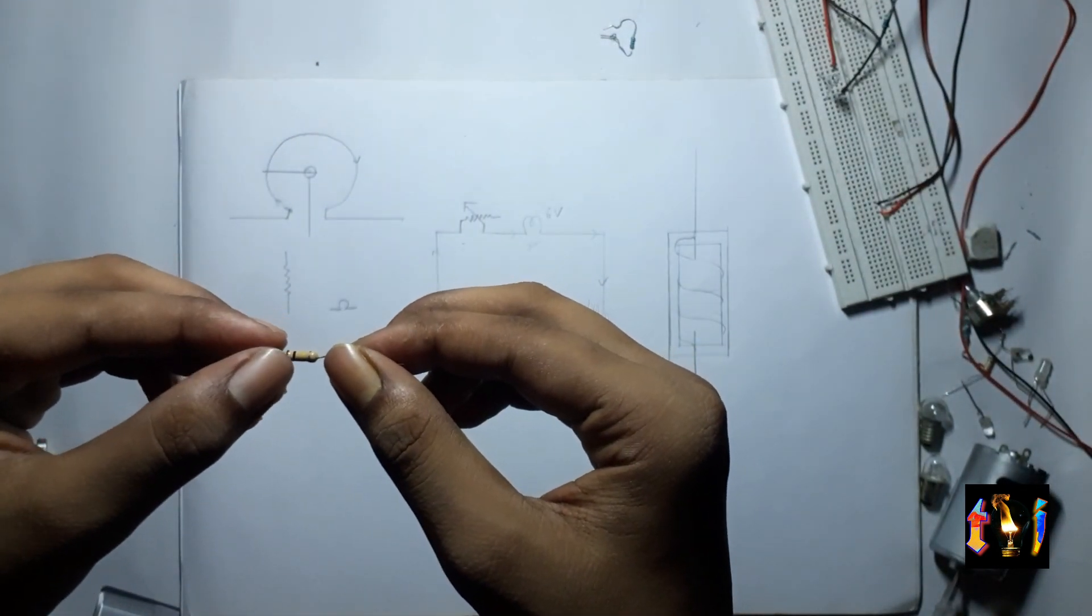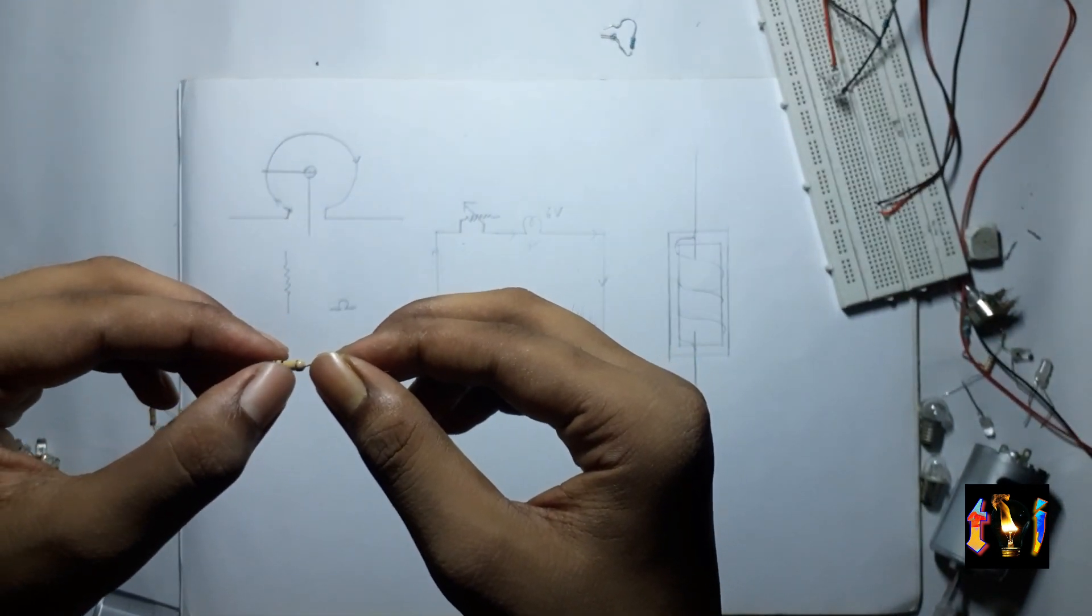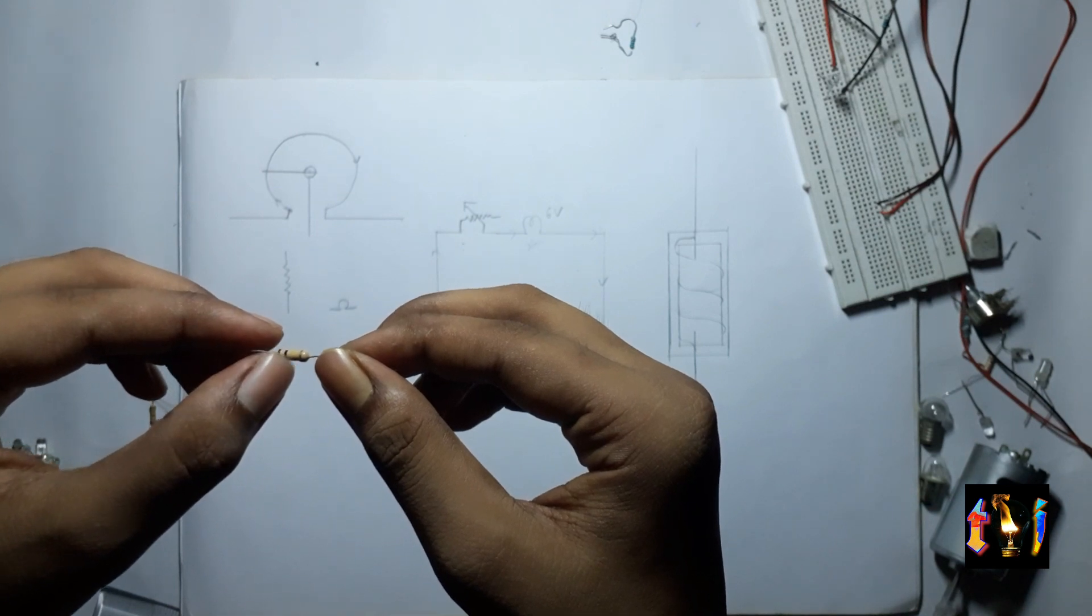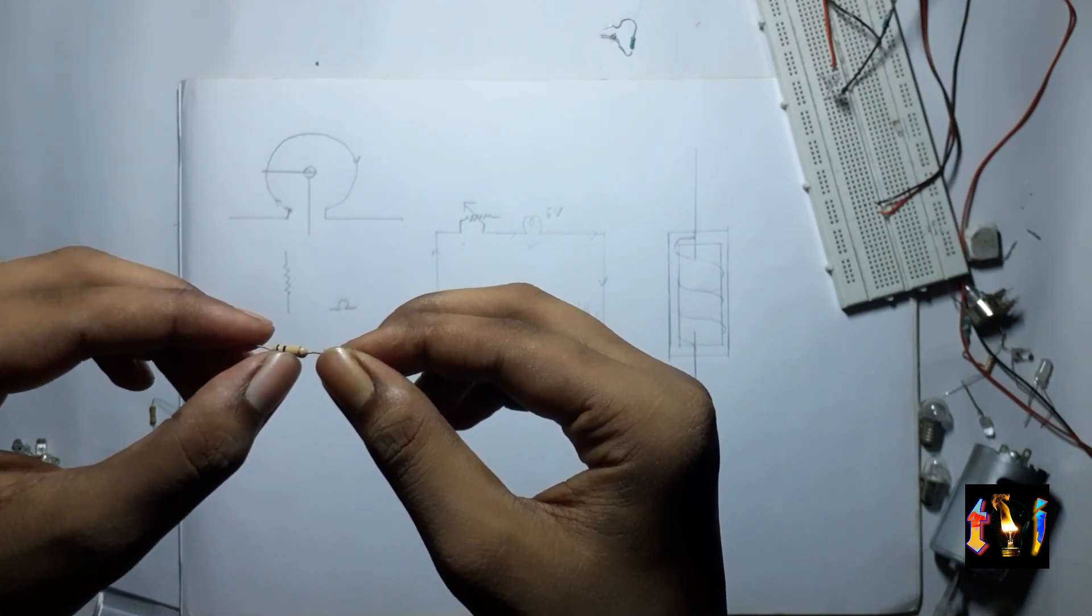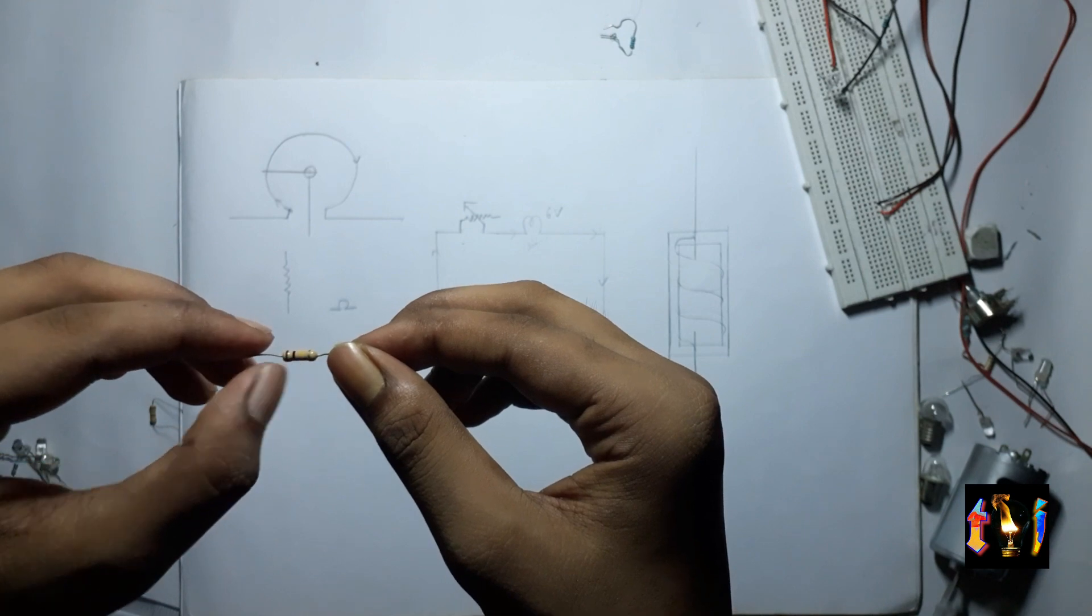So this is one, this is zero zero, that means 10 times three zeros, that means 10,000 or 10 kilo ohm resistor.